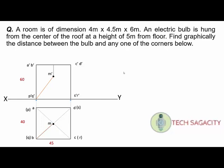Looking for the true length using the Line Rotation Method. In the front view and the top view, you rotate the line to find the true length. You rotate the line in the top view and move in a direction to get the true length.